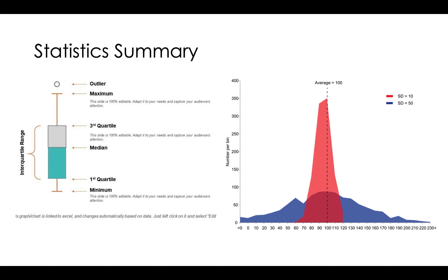We could also have a look at the quartiles. Median is the value sitting in the middle of your data. But quartiles could be what is sitting in the first 25% of the data, or the first 20%, or what is sitting in the last 25% of your data. That is another important thing we could figure out from our statistical summary.